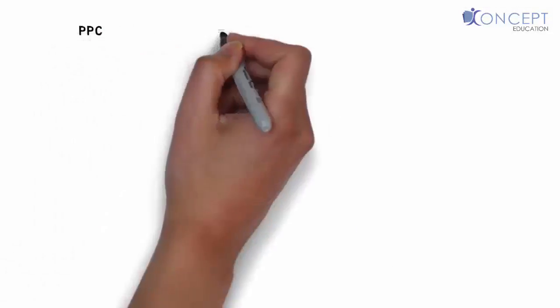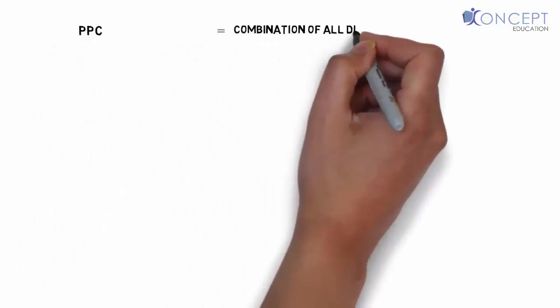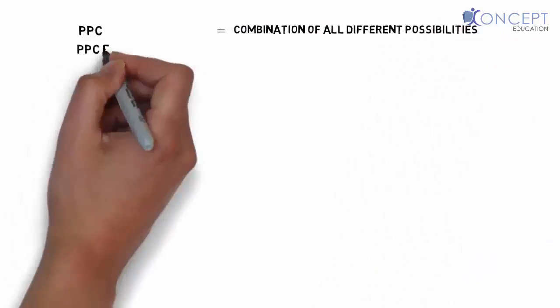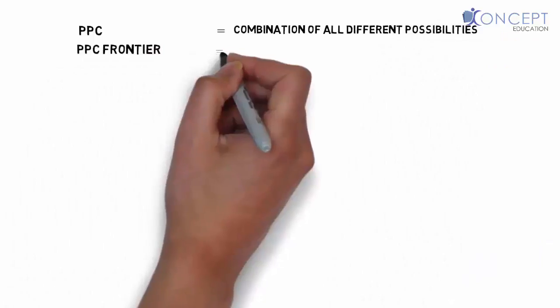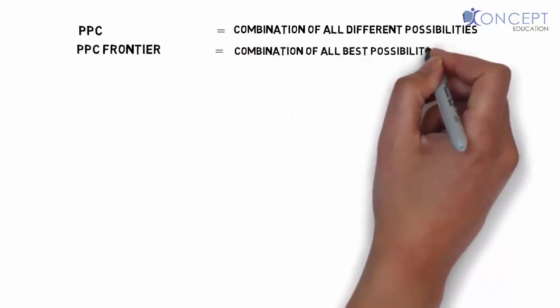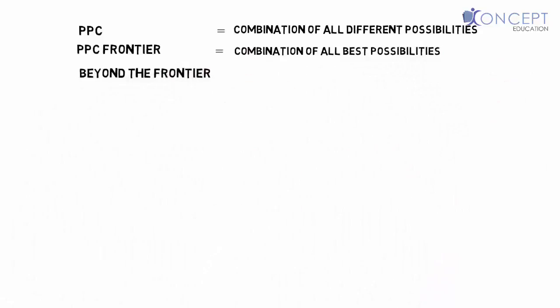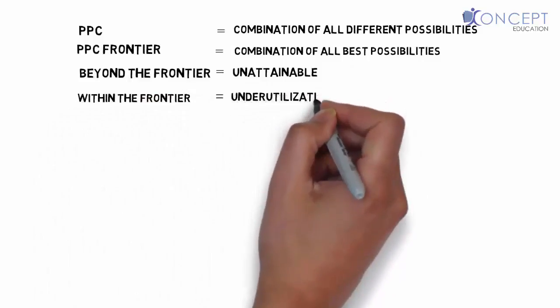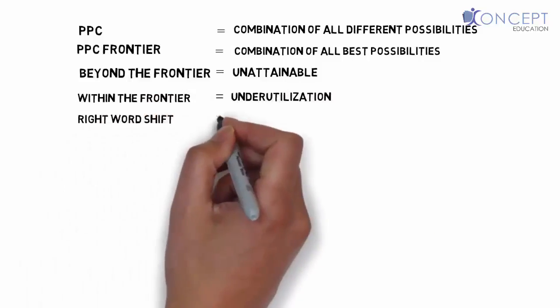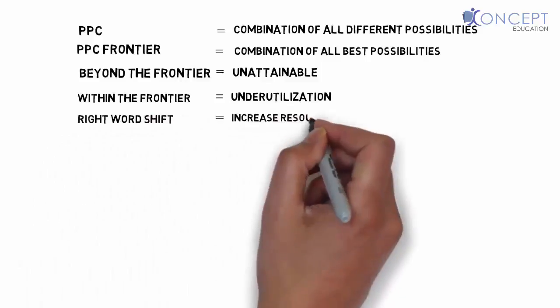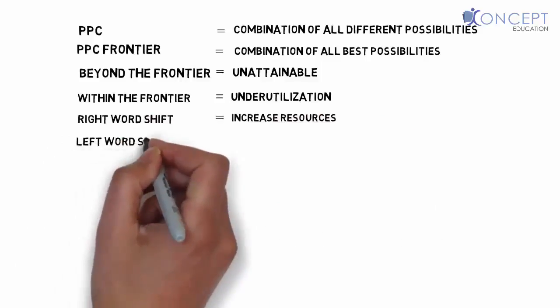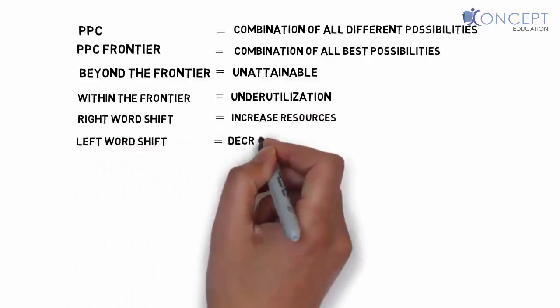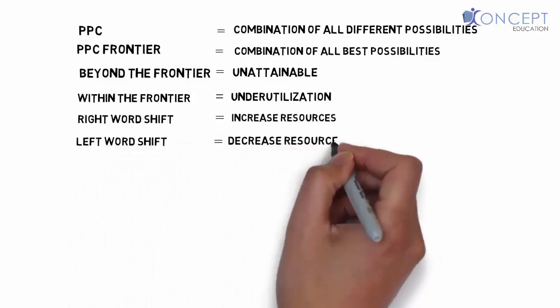So till now we know what PPC is. PPC is the combination of all different possibilities. The PPC frontier is the combination of all best possibilities. Beyond the frontier is unattainable at the moment. Within the frontier is under utilization of resources. Can I go to beyond the frontier? Yes, increase your resources. And can I go beyond? Yes. If your resources are decreasing, you have to go within your PPC point. Clear?